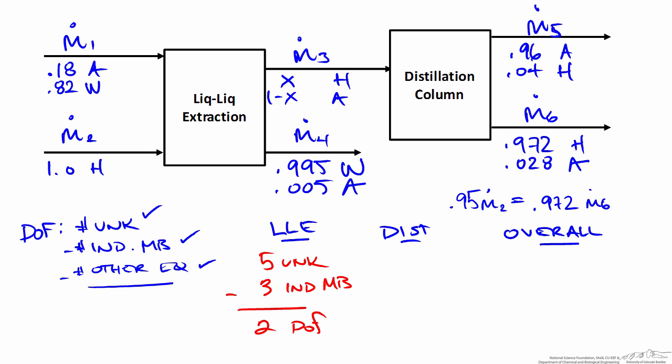Next, the distillation column has unknowns m3, x, m5, and m6 — four total. In this case we only have two species: hexanol and acetic acid, since water is not introduced to the distillation column. So we can only write two independent balances. With no other relating information, this also gives two degrees of freedom for the distillation column.